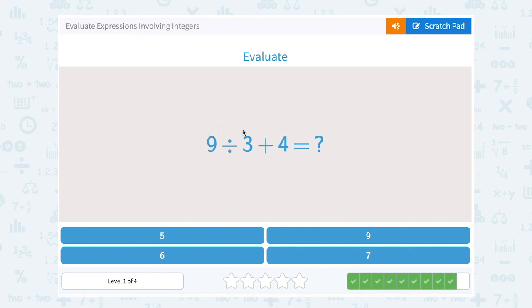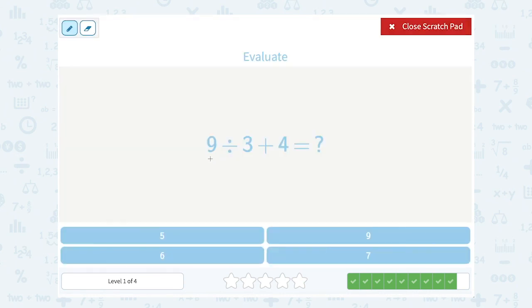9 divided by 3 plus 4. Okay, well I'm going to do the division part before I add, following my order of operations. So 9 divided by 3 gives me 3, and then I still need to add 4 to that. 3 plus 4 gives me 7 for my final answer.